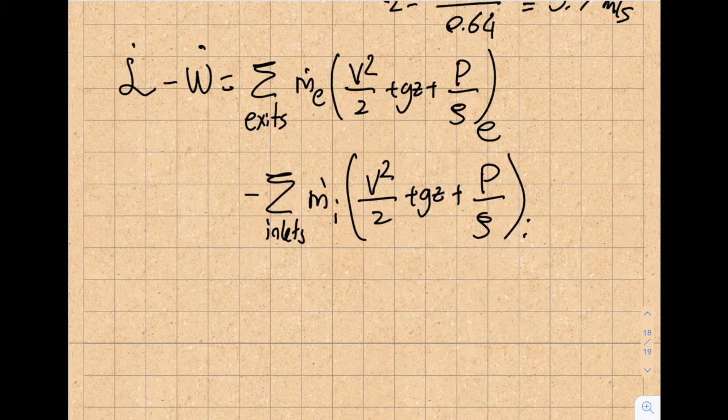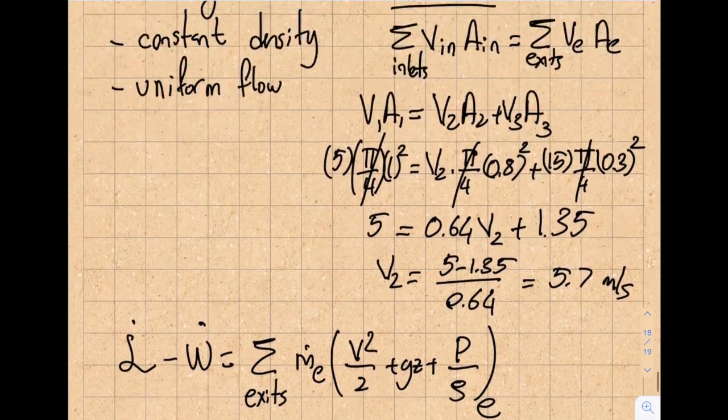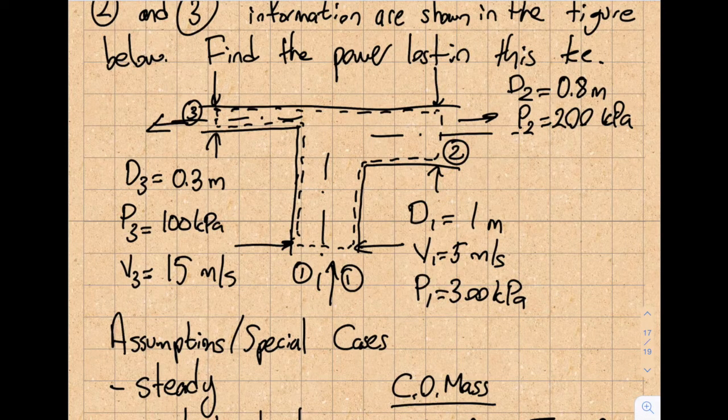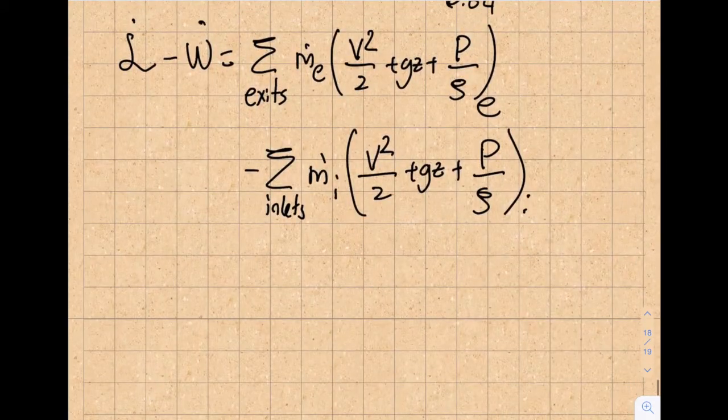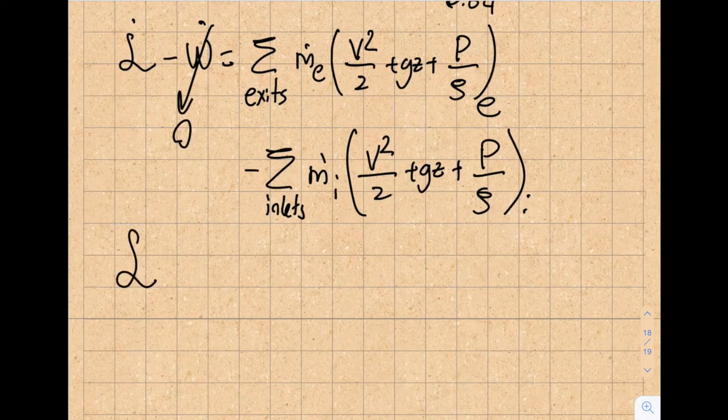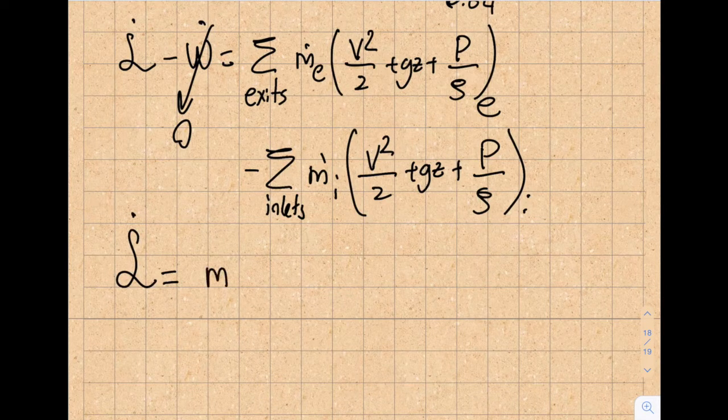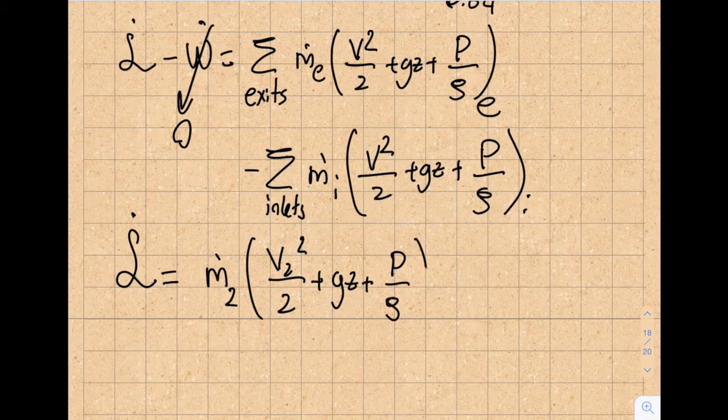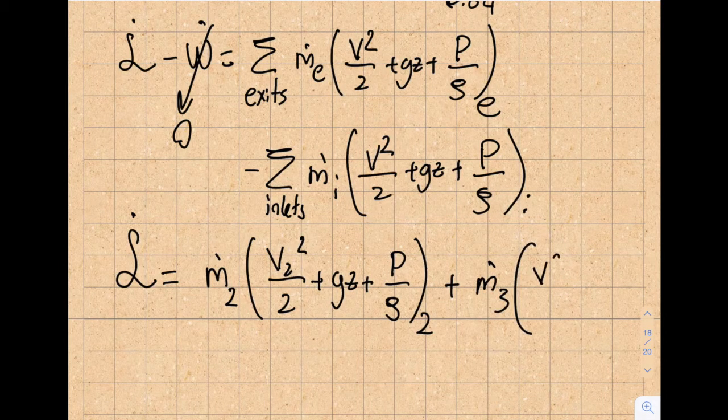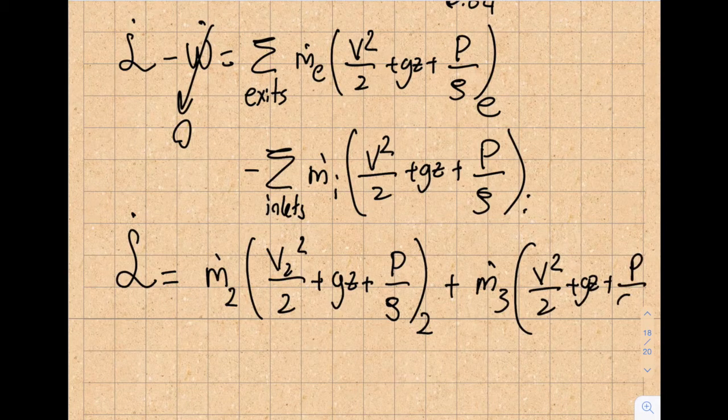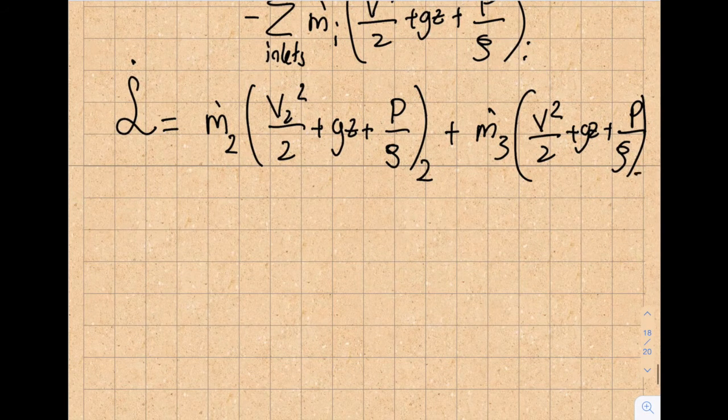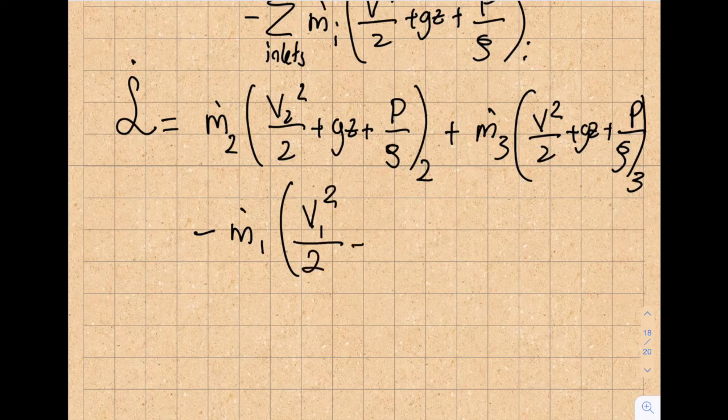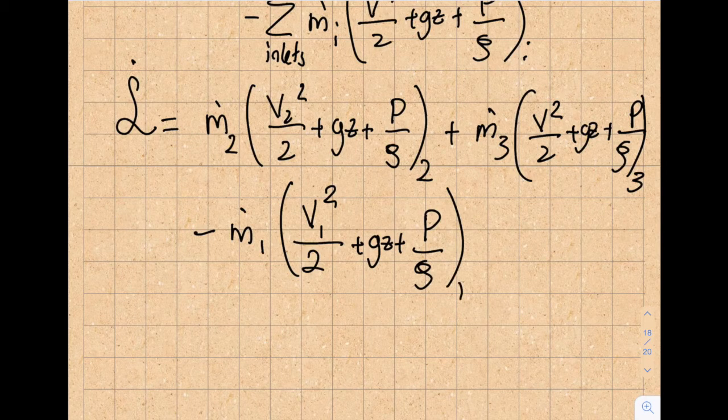If I look at this particular question, I don't have any work generated—I don't see any turbine or shaft work—so that will be out. I have two exits and one inlet. So from here, what's being asked to find, L̇, will equal ṁ2 times (v2²/2 + gz + p/ρ) at section 2, plus ṁ3 times (v3²/2 + gz + p/ρ) at section 3, minus ṁ1 times (v1²/2 + gz + p/ρ) at section 1.